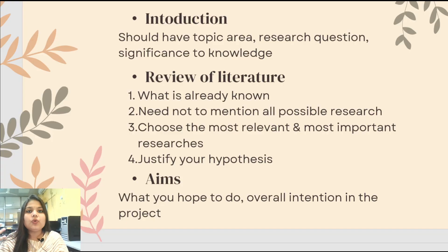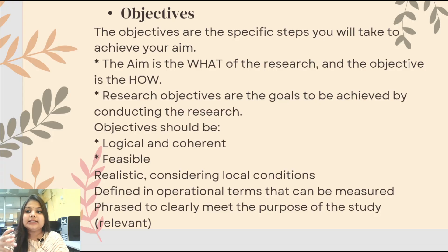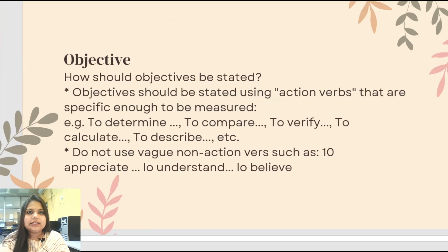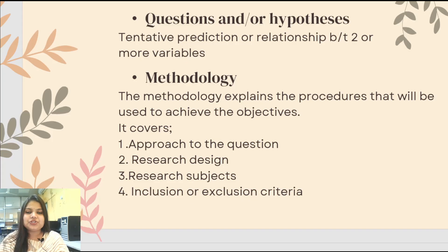Then we come to the aim, which is basically the overall intention of your whole project. Then comes the objective — if aim is the 'what,' then objective is the 'how': how am I going to do that research? We need to be very logical, feasible, and coherent when mentioning how we are going to attain the aim. Objectives are written using phrases like 'to determine,' 'to compare,' 'to verify' — as psychology students may know from writing files since grades 11 and 12.